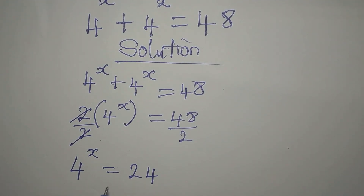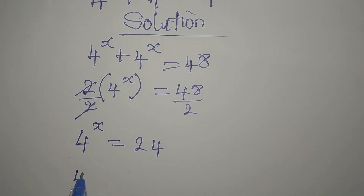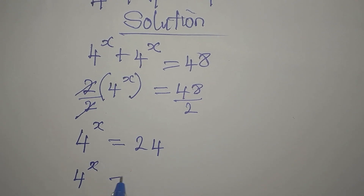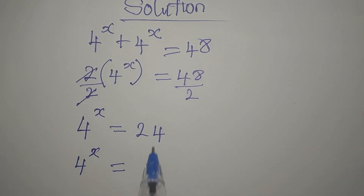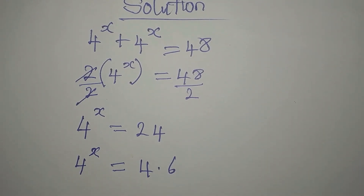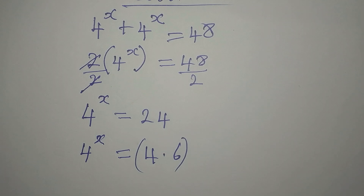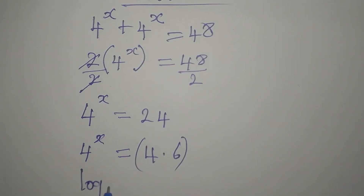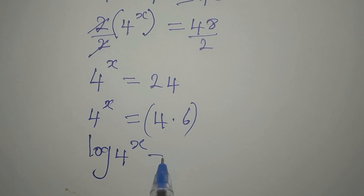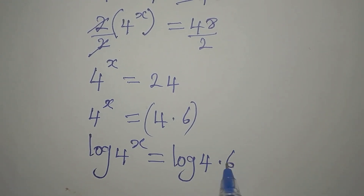Now our job is to express 24 in base 4, but that's not directly possible. So we write 4 to the power of x equals 24, which is the same as 4 multiplied by 6. Now let's take the log of both sides, so we have log of 4 to the power of x equals log of 4 multiplied by 6.